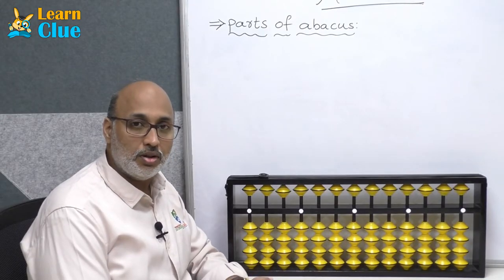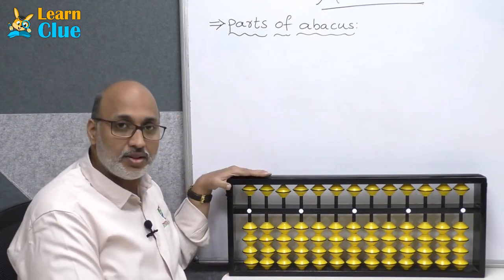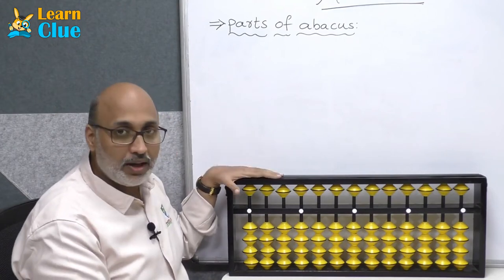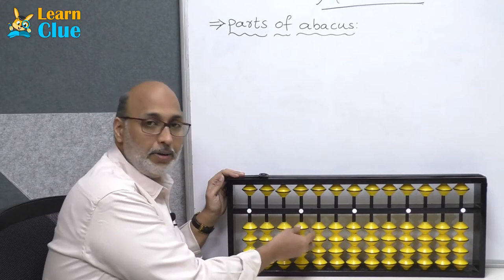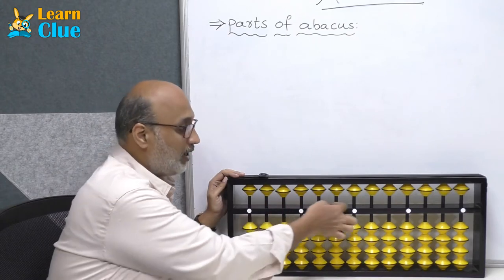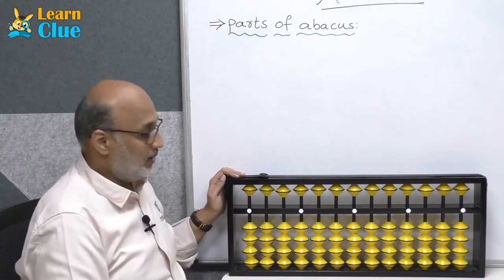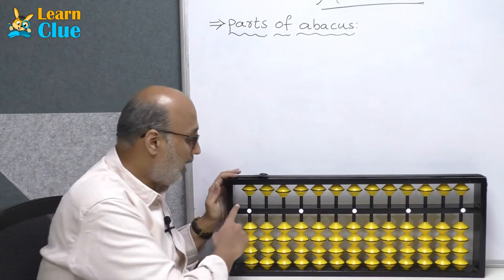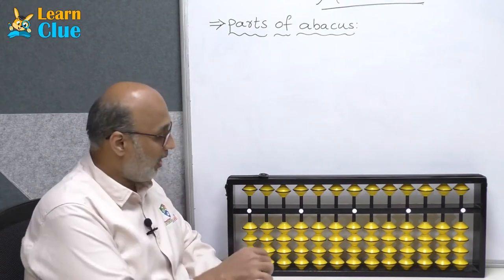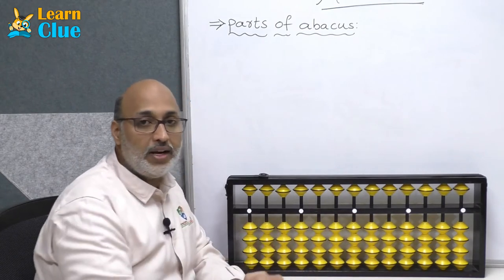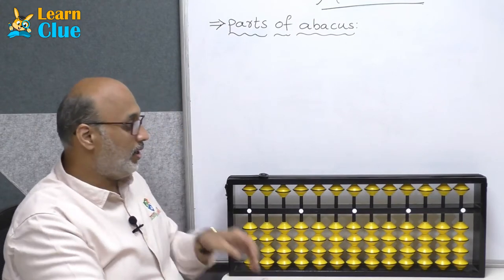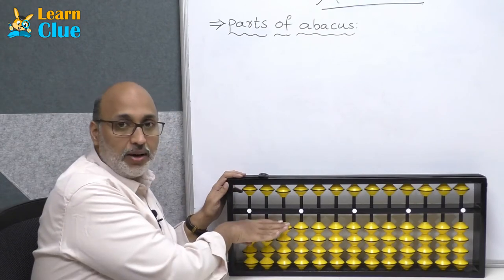Now we are going to learn about the parts of abacus. First of all, this is the abacus frame — it is in a rectangular shape. In this abacus you will see some rods and beads. The yellow ones we call beads and the black vertical lines we call rods. You will also see a line called the unit bar or answering bar, and white dots on it called unit dots.